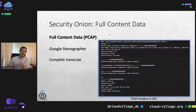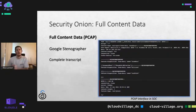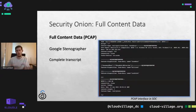Along with full packet capture data from Google Stenographer — we use Google Stenographer to record data off the wire and store it as indexed PCAP. It's more efficient than storing raw PCAP files. The files on disk are indexed, then we retrieve that via our PCAP application in Security Onion, and we can carve that PCAP pretty quickly. With that PCAP we get the complete transcript of whatever unencrypted traffic we can see.